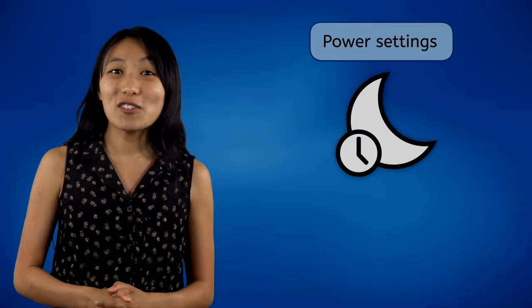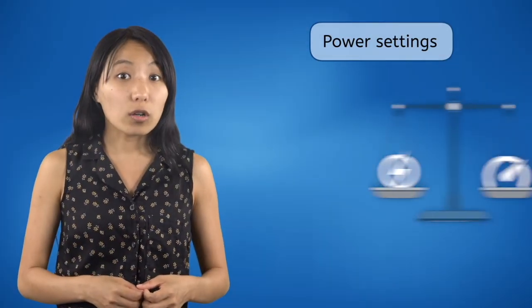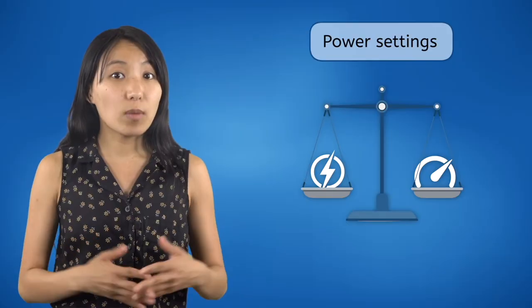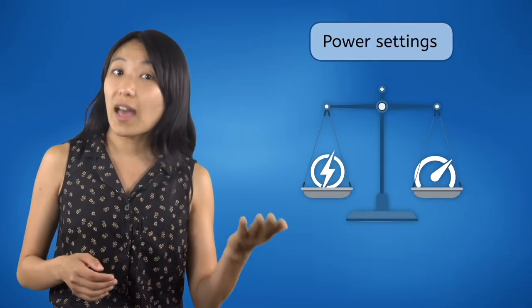If your computer is driving up your electricity bills or the battery isn't lasting very long, you may want to take a look at its power settings. In the power settings, you can change things like your computer's sleep timer, which will put your computer into sleep mode when you aren't using it to save power, or choose between different power-saving modes that balance energy consumption with high-speed performance.